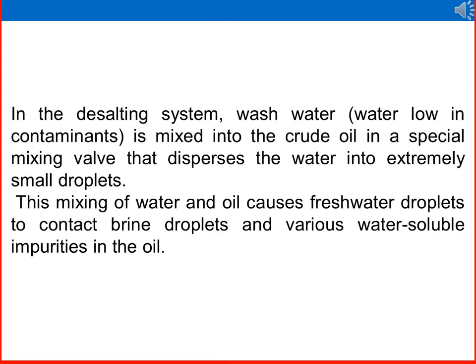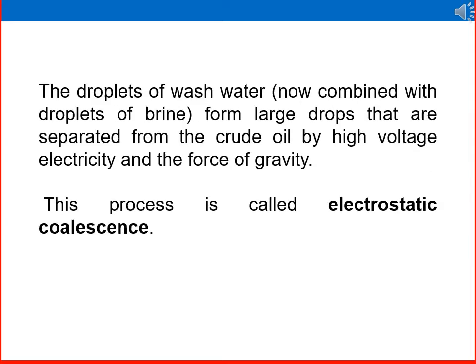In the desalting system, wash water — fresh water low in contaminants — is mixed into the crude oil coming from the separator in a special mixing valve that disperses the water into extremely small droplets. This mixing of water and oil causes fresh water droplets to contact brine droplets and various water-soluble impurities in the oil. The droplets of wash water, now combined with droplets of brine, form large drops that are separated from the crude oil by high voltage electricity and the force of gravity. This process is called electrostatic coalescence.